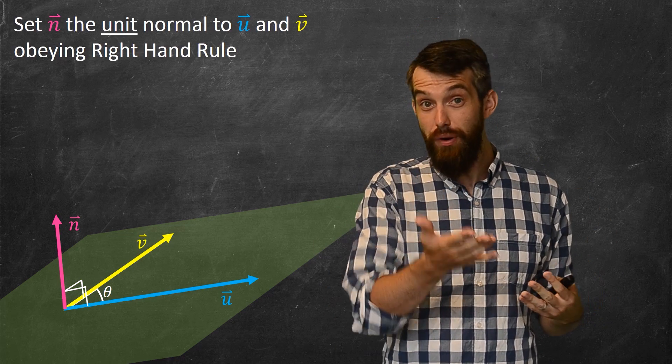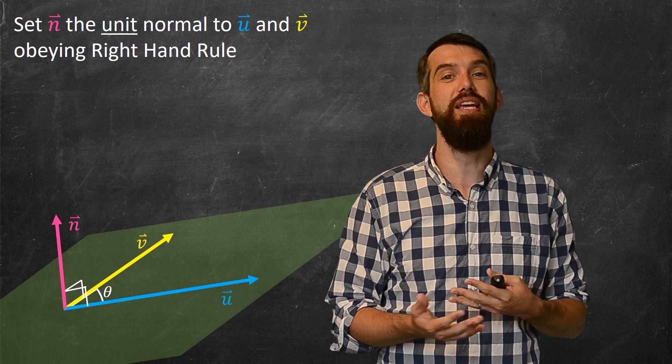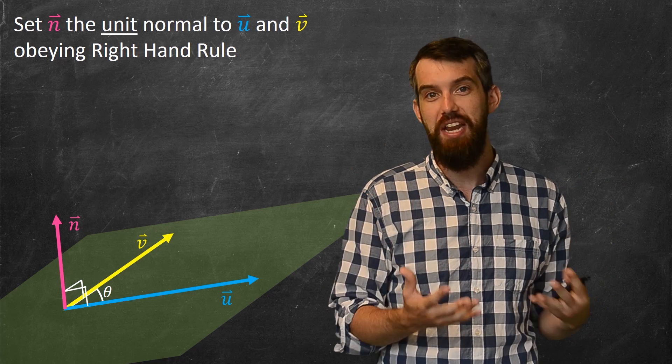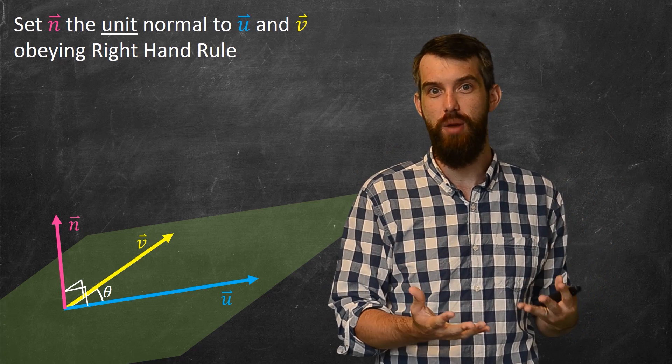If I only demanded that it was a unit vector, there would be two, one pointing up, one pointing down. When you say it's the one vector prescribed by the right-hand rule, it tells you there's only one unique vector that obeys these properties.